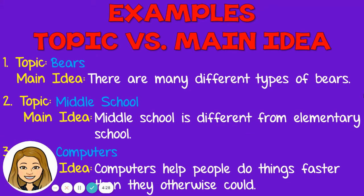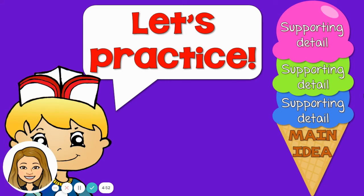And the third example: computers — that would be your topic. But the main idea is that computers help people do things faster than they otherwise could. Do you see how the topic and the main idea are different? The topic is just the general subject and the main idea is the most important point that the author is trying to make or tell you.